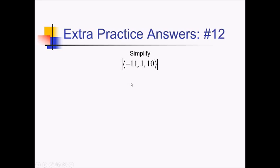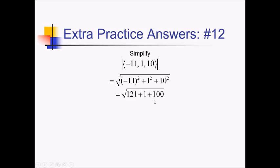On this problem, we're trying to find the magnitude of this vector, so we essentially have to square all of these, add them together, and square root it — kind of like a three-dimensional Pythagorean theorem. We have the square root of (negative 11) squared plus 1 squared plus 10 squared, which is the square root of 121 plus 1 plus 100. That's going to be 222 under the square root. If you split this up, you'd have 2 times 111, and 111 is divisible by 3 — so 3 times 37 — but it doesn't simplify to a perfect square factor, so this doesn't get any simpler.